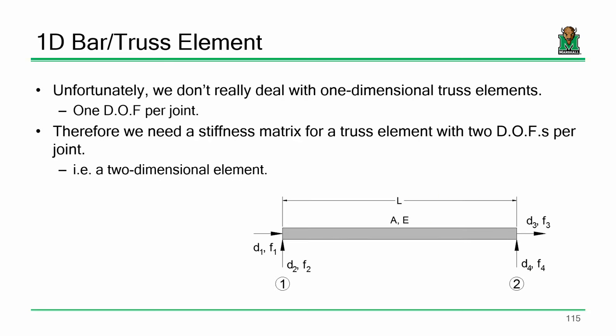That's nice if everything is along one axis, but that's not the case with trusses. Trusses have members all over the place — going left to right, up and down. Trusses are triangular structures, so we have to incorporate another dimension. Each one of these joints could translate horizontally as well as vertically. So how many degrees of freedom do we now have at each joint? Two. So the stiffness matrix for a truss element should be four by four.